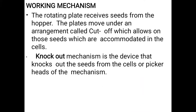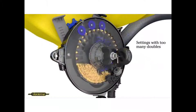Working mechanism: The rotating plate receives seeds from the hopper. The plate moves under an arrangement called the cut-off, which allows only those seeds which are accumulated in the cells. Knockout mechanism: The knockout mechanism is the device that knocks out the seeds from the cells or picker heads of the mechanism.